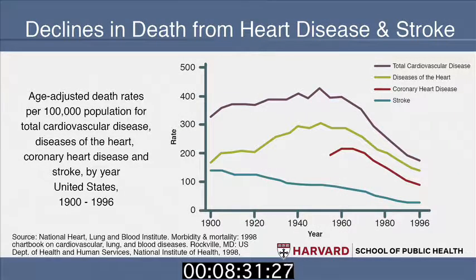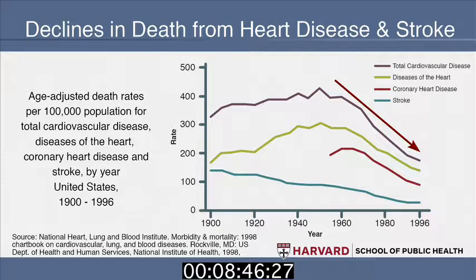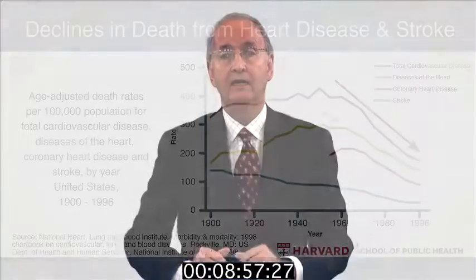Heart disease has been the leading cause of death in the United States since 1921, and stroke the third leading cause since 1938. The chart shows dramatic declines in heart disease and stroke through a host of interventions. One of the biggest is the amazing drop in tobacco use and smoking, but there are others — better medical care, emergency treatment, defibrillators — all part of the public health enterprise working closely with the clinical community.